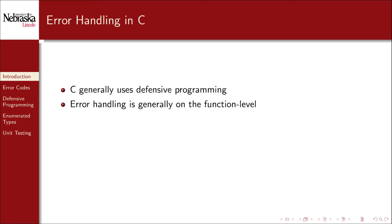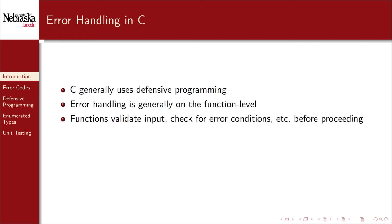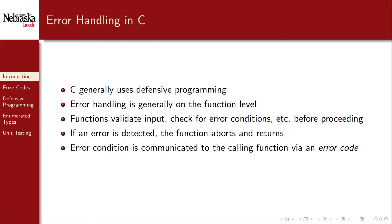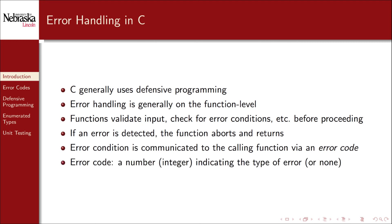Instead, in C we generally use defensive programming. For the most part, error handling is done at the function level. When you call a function, that function is responsible for validating the input and checking for potential error conditions before proceeding. If an error state is detected, the function aborts its execution and returns. To let the calling function know that an error occurred, an error is reported using an error code — simply an integer that indicates the type of error or that no error occurred. By convention, we use zero for no error. We'll cover this in detail in the next part.